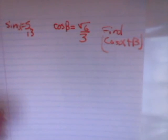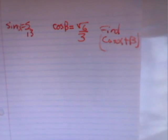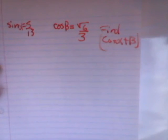So, to find the other pieces of the cosine alpha plus beta, we're going to need to do a triangle.